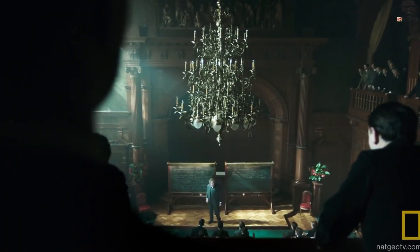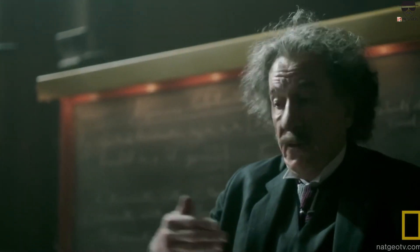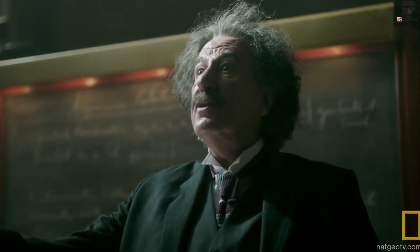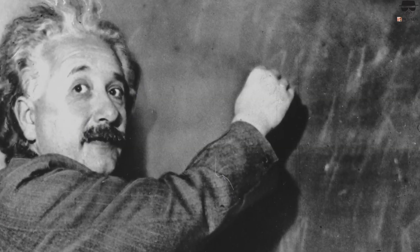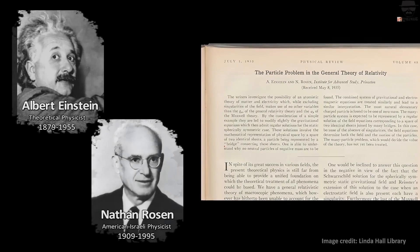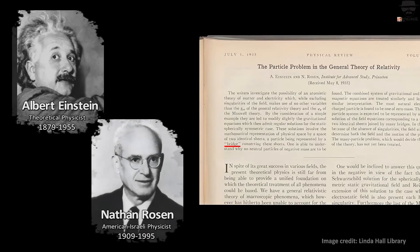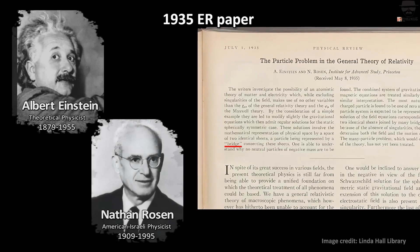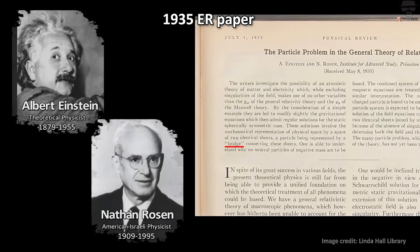It comes down to intricate interconnections between two of Einstein's ideas: wormholes and quantum entanglement. In 1935, Einstein was working with his student Nathan Rosen on ways to convert his theory of gravity, called the theory of general relativity, into a theory of everything.